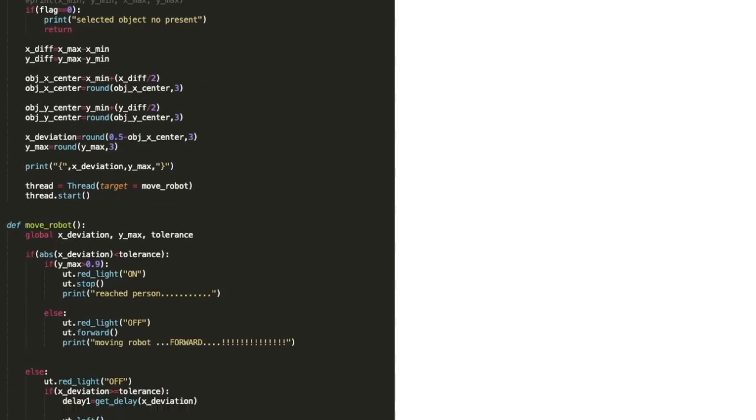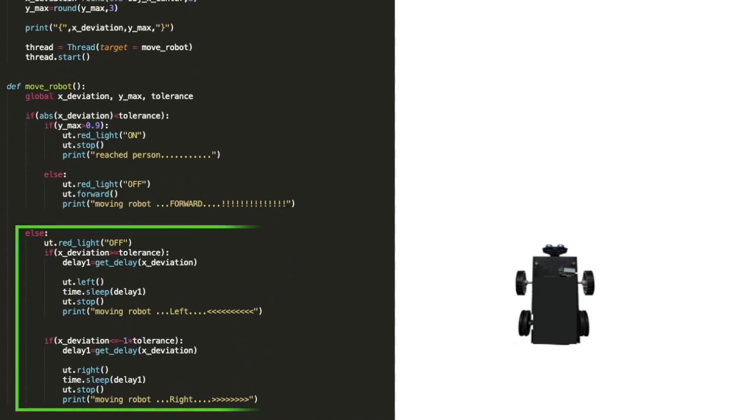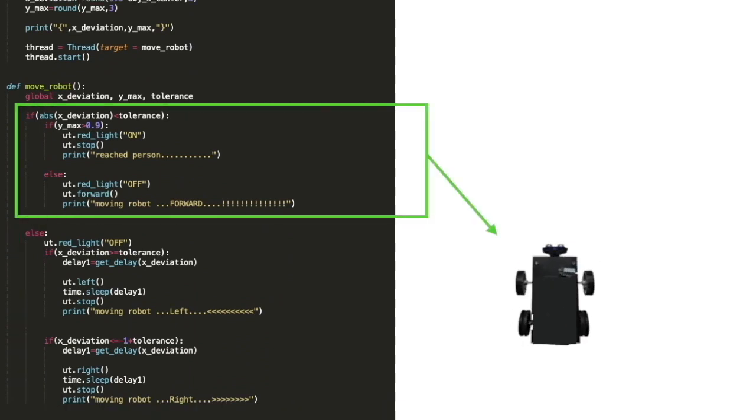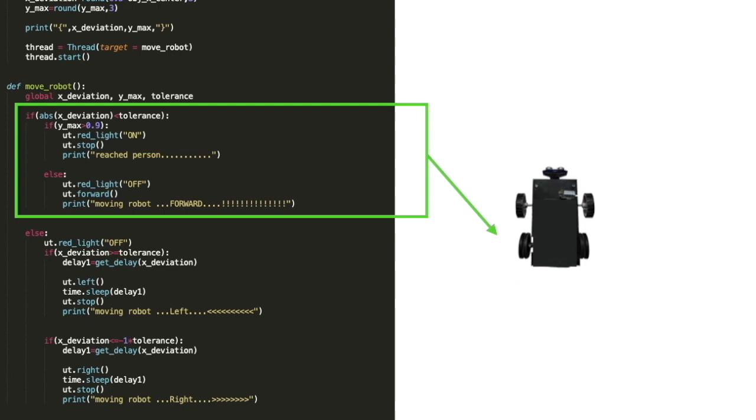Coming to the robot movement function, this part turns the robot right or left and this part moves it ahead. All of this is happening 10 times a second to get a quick response from the robot.